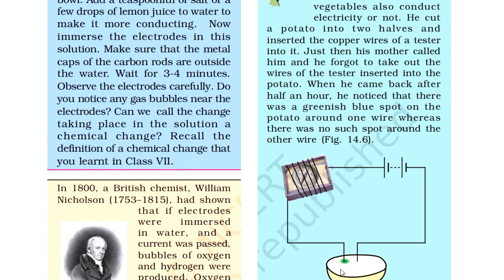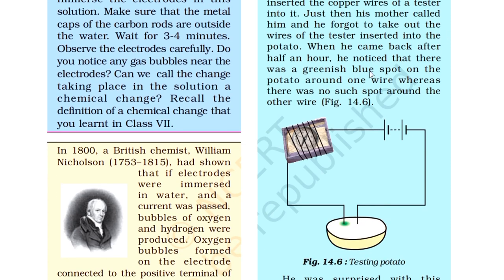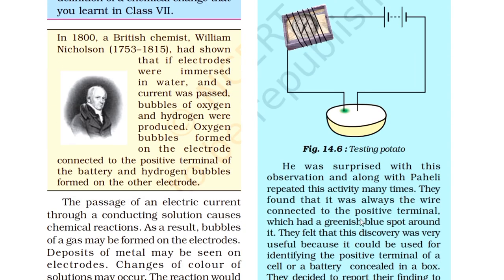Bhujo ने एक आलू लिया, उसे दो टुकड़ों में काट दिया, और tester के एक wire को एक टुकड़े में और दूसरे wire को दूसरे टुकड़े में डाल दिया। Just then his mother called him — Bhujo की माँ उसे बुला लेती है और Bhujo tester के wires को potato में से निकालना भूल जाता है। When he came back after half an hour, he noticed a greenish blue spot near one wire.